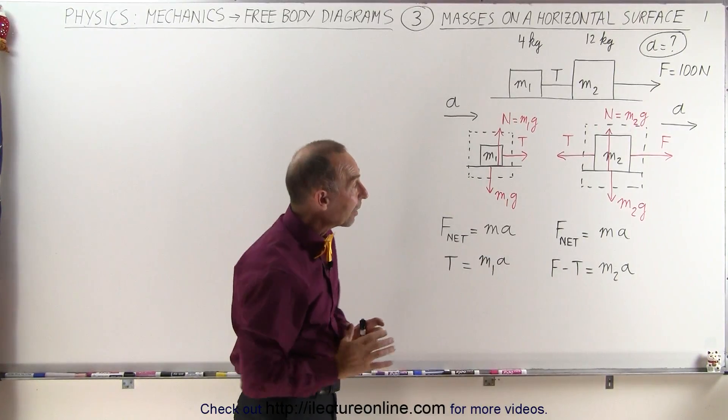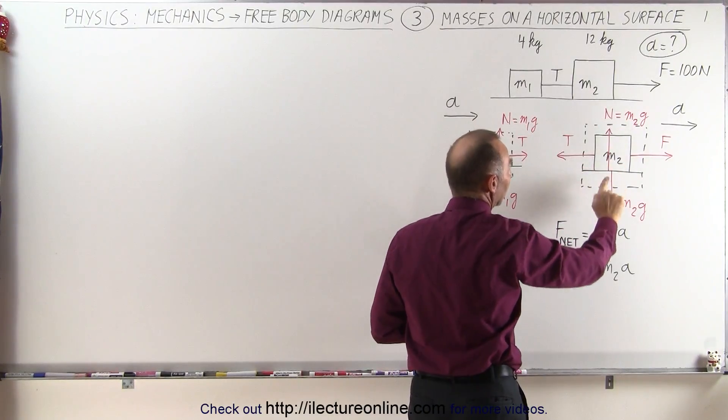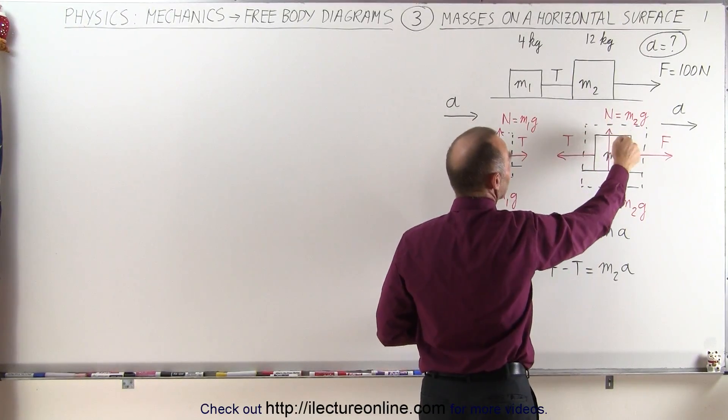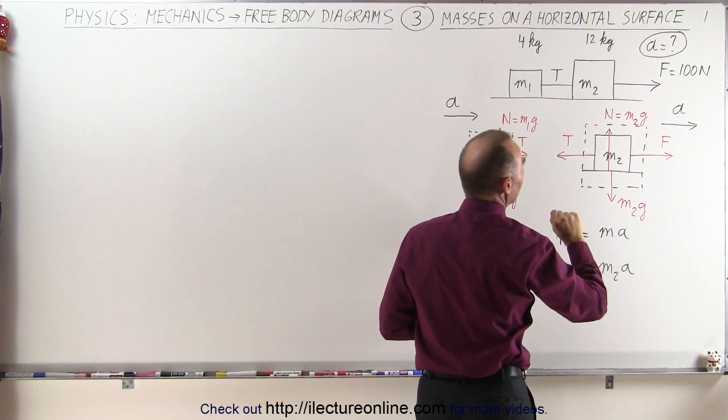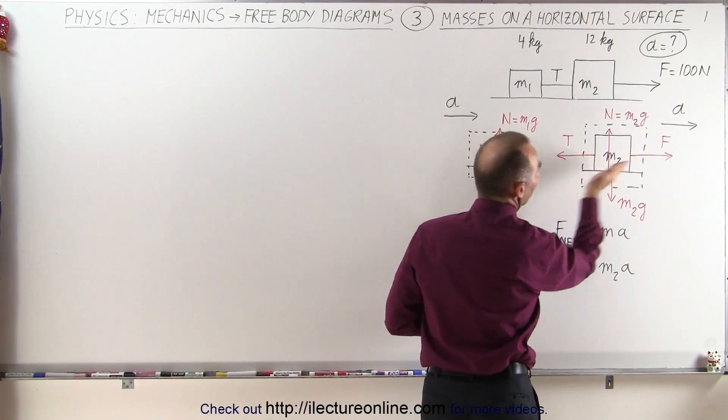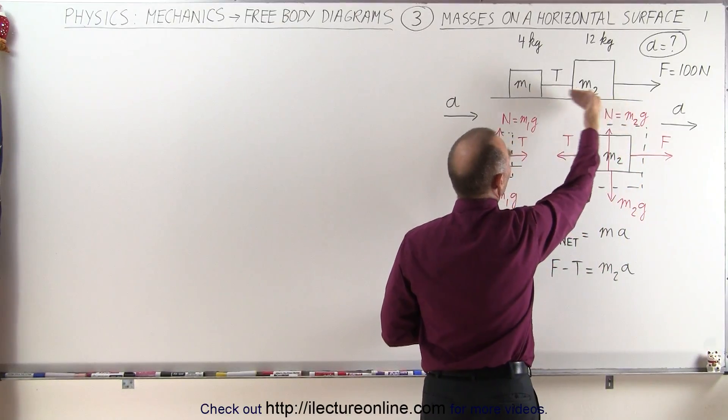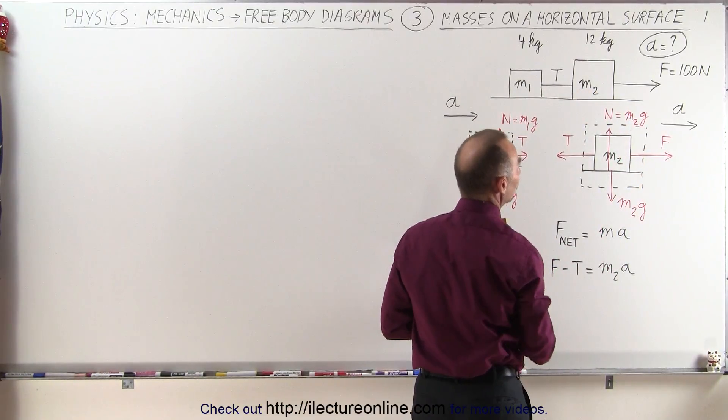For the second mass, notice again we have the force of gravity pulling down, the normal force pushing back and they're equal and opposite so therefore they cancel each other out, and then we have two forces, the force pulling to the right and the tension on the string pulling to the left on block M2.